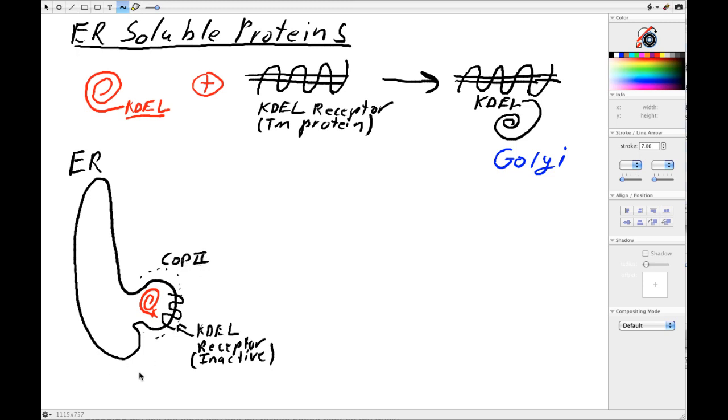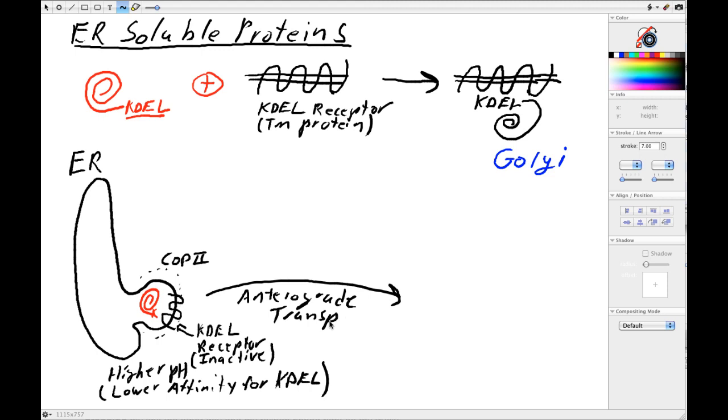How do we know it's kept inactive at this point? What's largely thought to happen is that the ER is higher pH and what this means is lower affinity for the KDEL sequence. So what we have is a KDEL sequence containing protein that's leaked into this COP2 vesicle. We get anterograde transport and I'm going to skip all the vesicle coating, uncoating, fusion steps and we're just going to get to the Golgi.